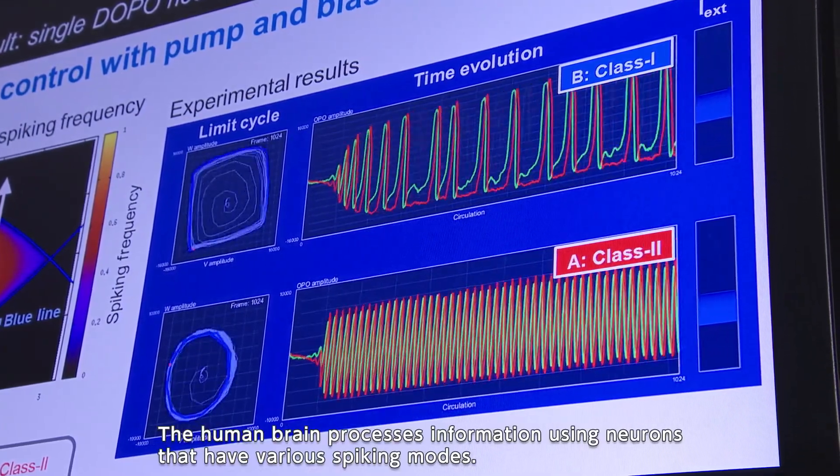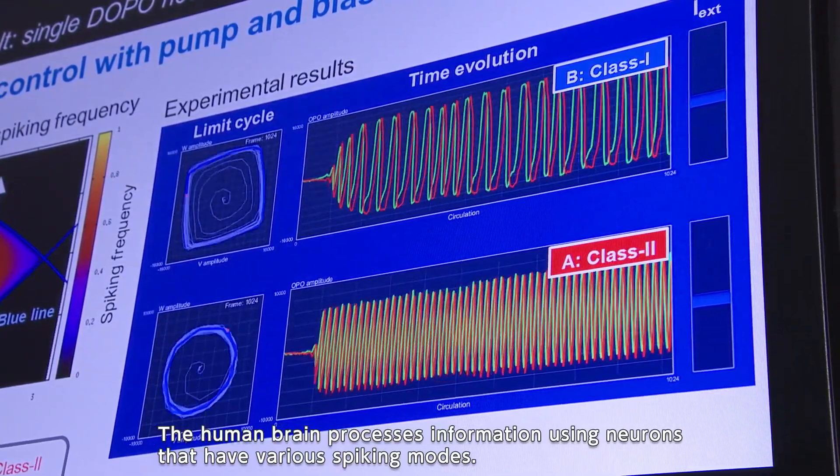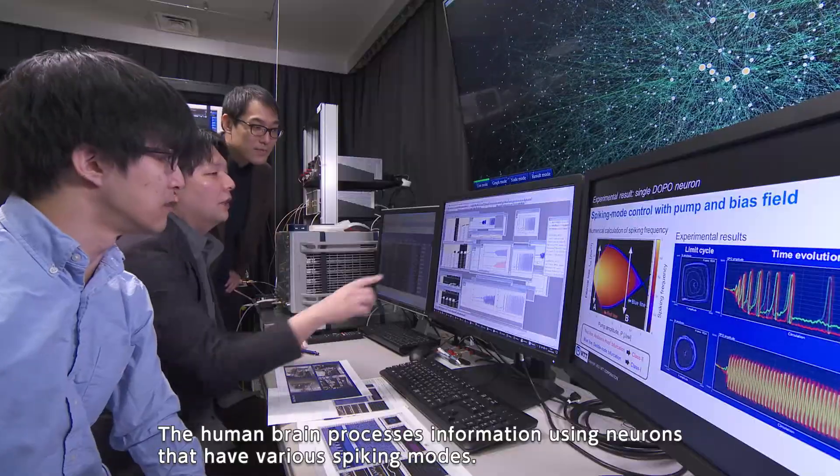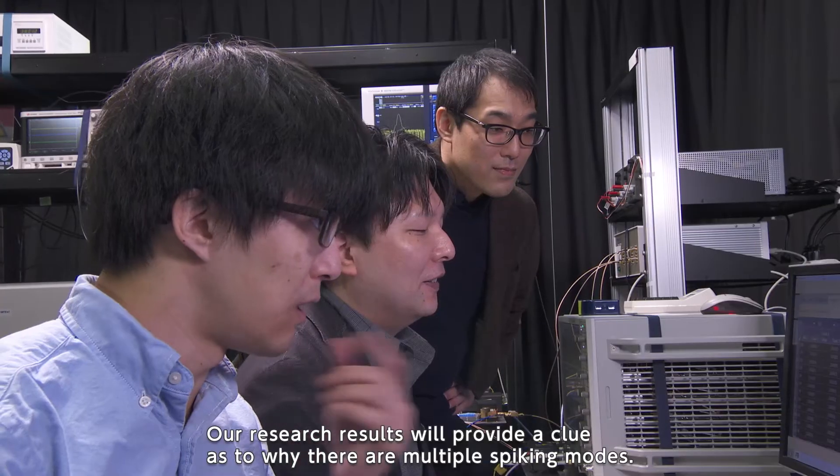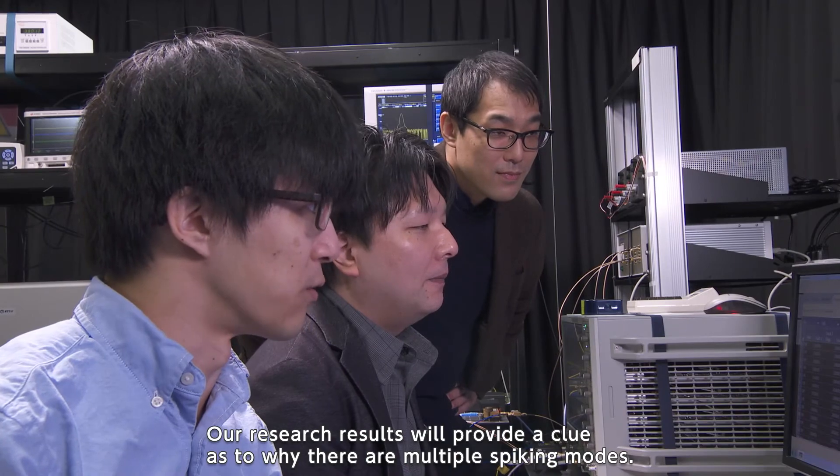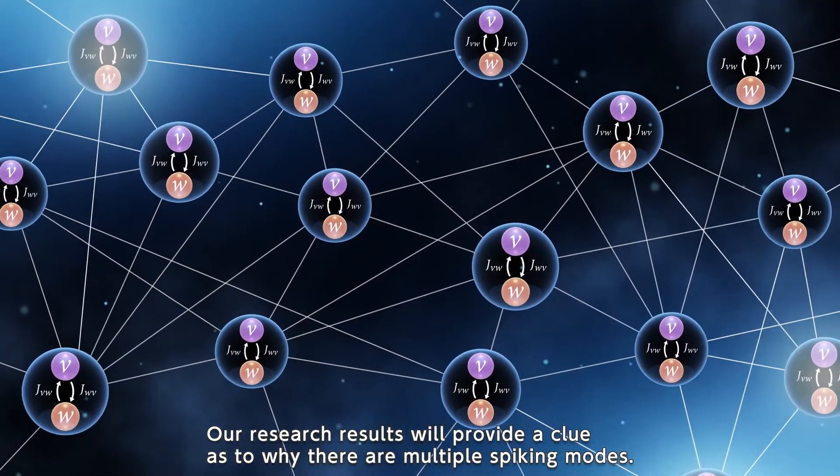The human brain processes information using neurons that have various spiking modes. Our research results will provide a clue as to why there are multiple spiking modes.